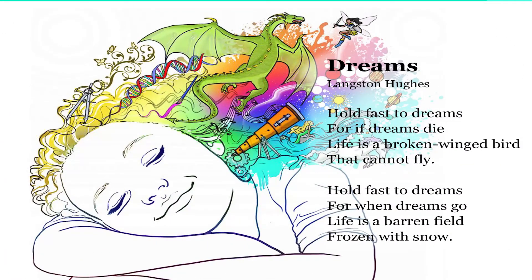Here is a short poem we are going to analyze to figure out the central idea or theme. This poem is entitled 'Dreams' by Langston Hughes. 'Hold fast to dreams, for if dreams die, life is a broken-winged bird that cannot fly. Hold fast to dreams, for when dreams go, life is a barren field frozen with snow.'